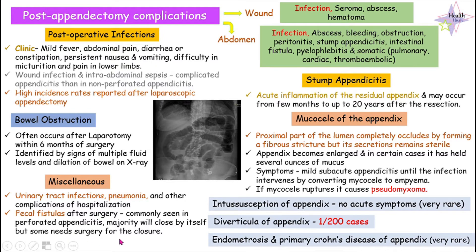Some fecal fistulas need surgery to be closed. Let's move on to stump appendicitis. By its name itself, you can identify that it's the inflammation of the stump of the appendix. The stump is known as the residual part of the appendix after appendectomy. If there is acute inflammation of the residual appendix, it is known as stump appendicitis, and it can occur at any time — after a few months of the surgery or even after 20 years.